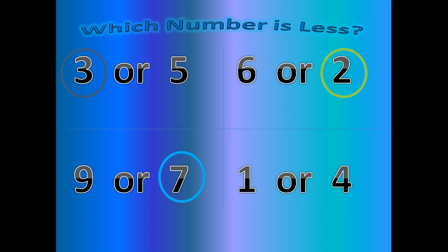One or four? Which number is less or fewer? One. One is fewer or less than four.